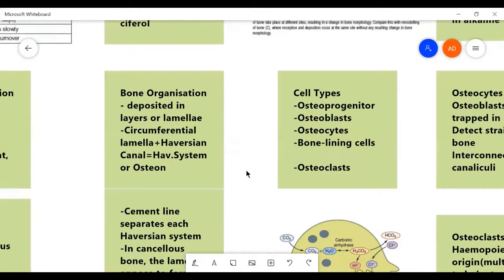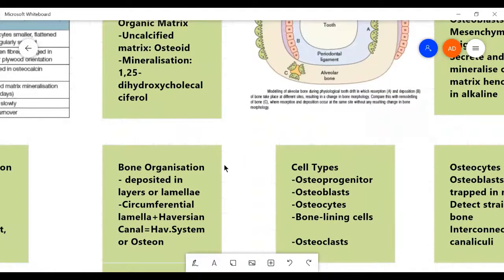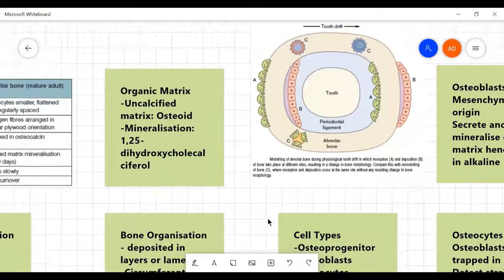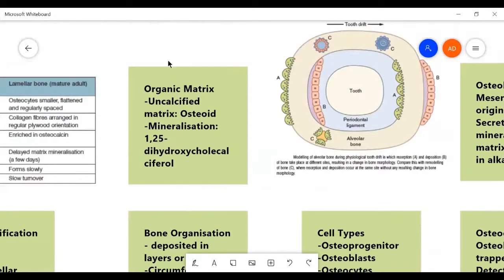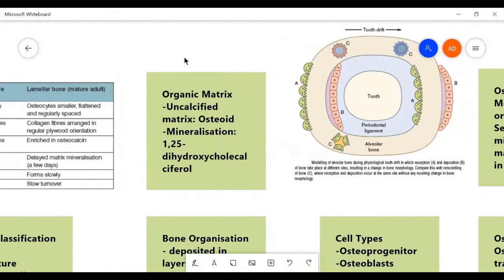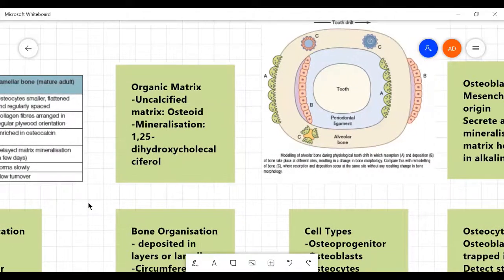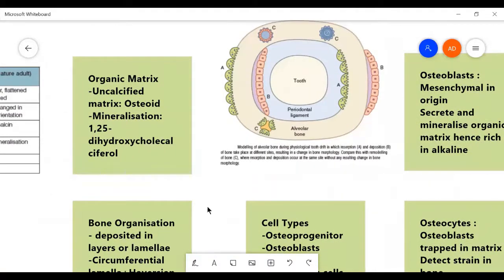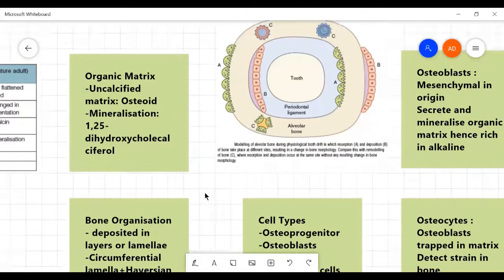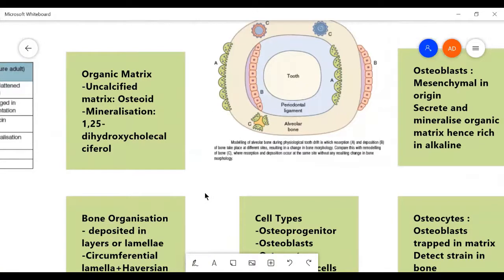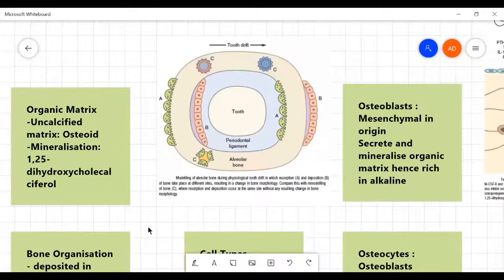There are different types of cells which control the maintenance of alveolar bone. First of all, the bone ossifies in an uncalcified matrix called osteoid. And its mineralization is controlled by several factors. And one of the main factors of mineralization is 1-2-5-dihydroxycholocalciferol, which is the active form of vitamin D.